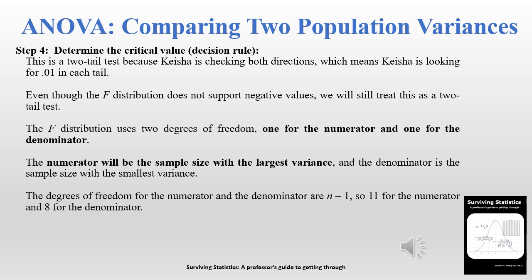The F distribution actually uses two degrees of freedom: a numerator and a denominator. The numerator will be the sample size with the largest variance and the denominator the sample size with the smallest. The degrees of freedom for both are n minus 1, giving us 11 for the numerator and 8 for the denominator, and we'll see how that works on a table in the next slide.